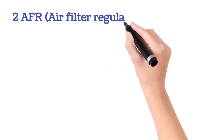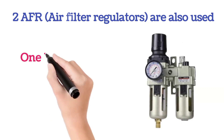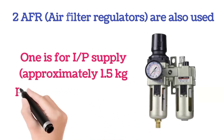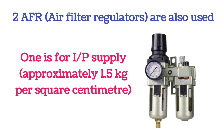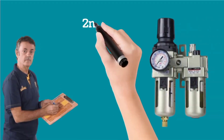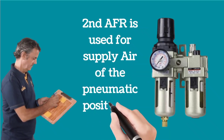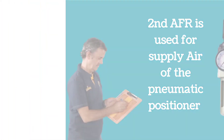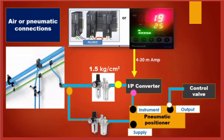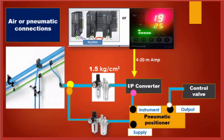Two AFRs, meaning air filter regulators, are used. One AFR is used for the I2P converter supply, which is kept at approximately 1.5 kilograms per square centimetre. The second AFR is used for the pneumatic positioner supply. You can better understand the pneumatic or air connections by this image. Supply air is provided to the air filter regulators for the I2P converter and pneumatic positioner. When the 4 to 20 milliampere signal is fed to the I2P converter, it gives output to the pneumatic positioner, and then the control valve is operated according to the signal.